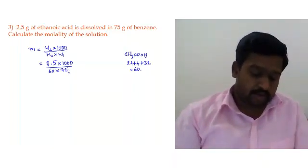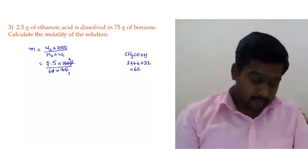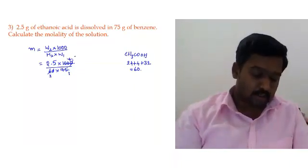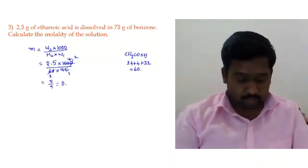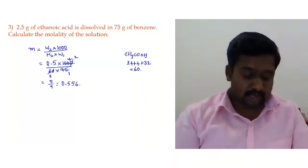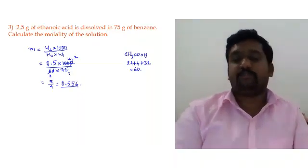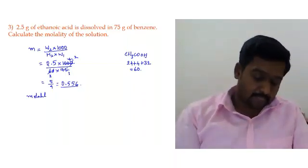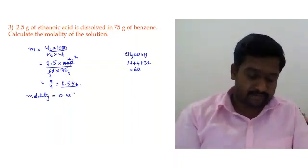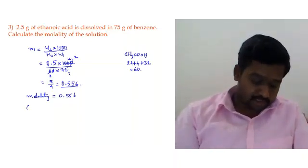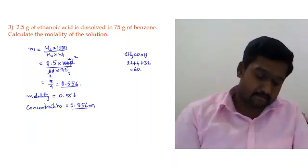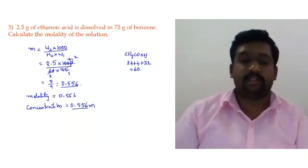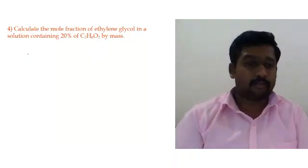Simplifying: 25 × 3 = 75 and 25 × 40 = 1000. Cancelling one zero with the zero of 60, the equation reduces to 5/9, giving the answer 0.555 recurring, which rounds to 0.556. So the molality of the solution is 0.556 m.